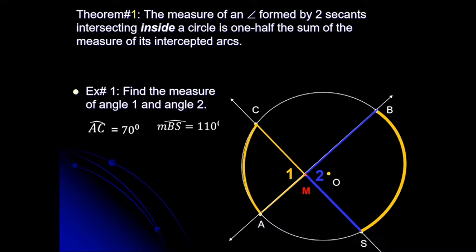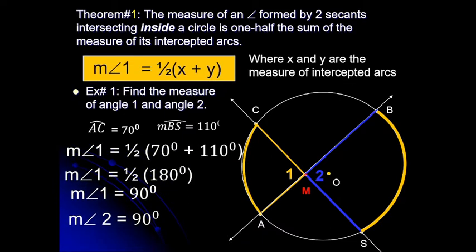If two secants intersect inside the circle, they form four angles. You can find the degree measure of each angle using Theorem 1. Theorem 1 states that the measure of an angle formed by two secants intersecting inside the circle is one-half the sum of the measures of its intercepted arcs. In symbols, the measure of angle 1 equals one-half of (x + y), where x and y are the measures of its intercepted arcs.